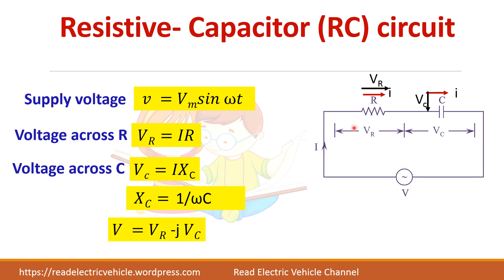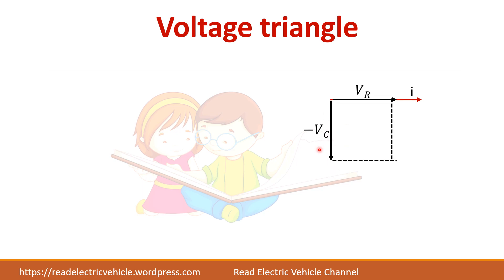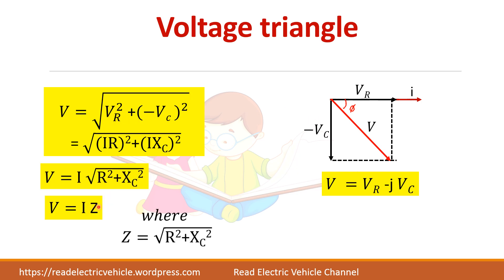The resultant voltage V is equal to the sum of the resistive voltage plus the capacitor voltage. Drawing the voltage triangle with current as reference: Vr will be in phase with the current, and Vc will be lagging the current by 90 degrees, represented by minus Vc. The resultant voltage V makes an angle phi with the current I, so V equals Vr minus j times Vc. The magnitude is found by taking the square root, giving impedance Z equal to root of R squared plus Xc squared.